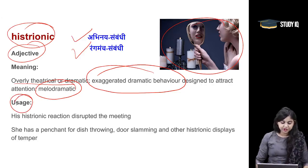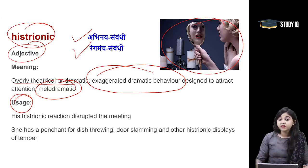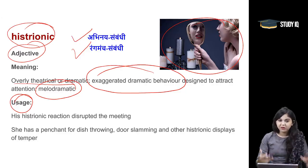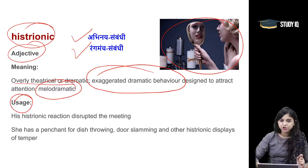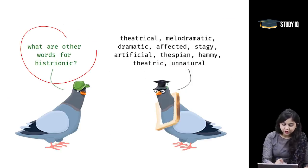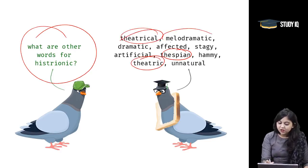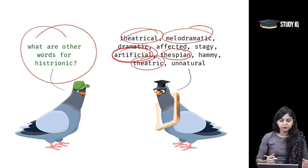Let's look at the usage of this adjective. His histrionic reaction disrupted the meeting. She has a penchant for dish throwing, door slamming, and other histrionic displays of temper — someone very melodramatic when angry. Important synonyms of histrionic are: thespian, theatrical, melodramatic, and artificial — because it often appears artificial.